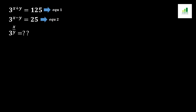Welcome to AMS. Today in this video we are going to solve a question. Our given equations are: equation one, 3 to the power x plus y equals 125, and equation two, 3 to the power x minus y equals 25. We need to find the value of 3 to the power x over y, which is our required expression.